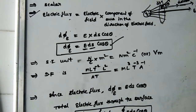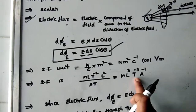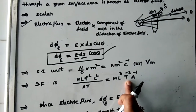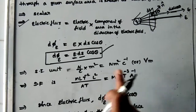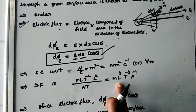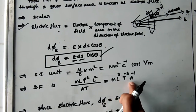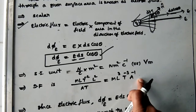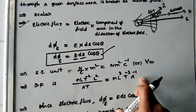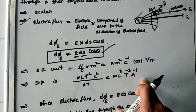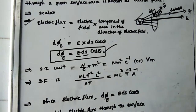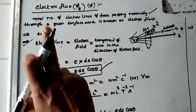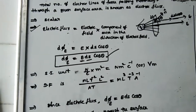Remember this dimensional formula. In final exams, they sometimes ask the question in reverse: which physical quantity has dimensional formula M L³ T⁻³ A⁻¹? Your answer is electric flux.